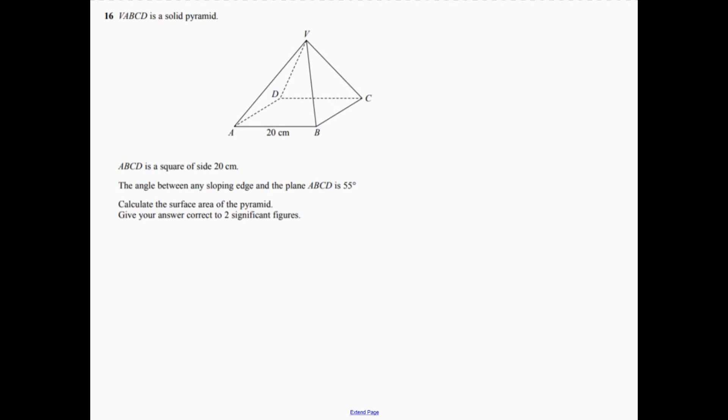Question 16. So we need to work out the surface area of the pyramid. Basically, that's going to be a square, 20 by 20, and then we've got four triangles. So we're going to have times four.